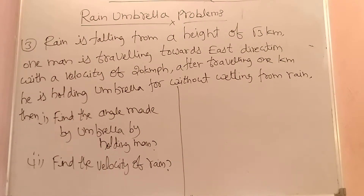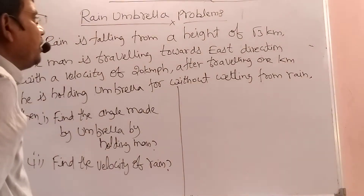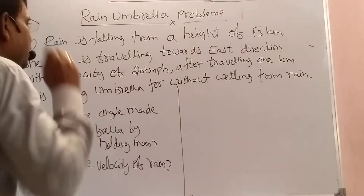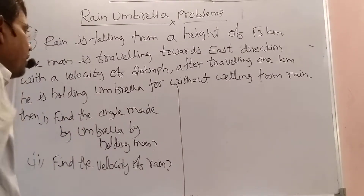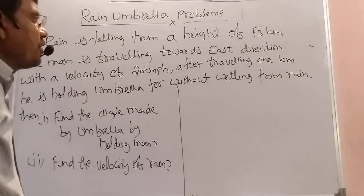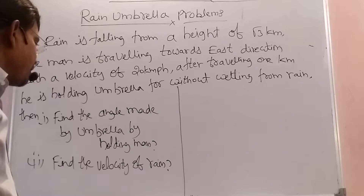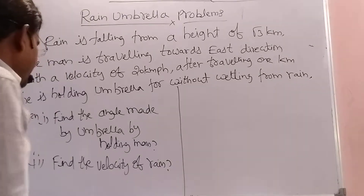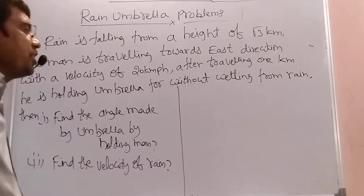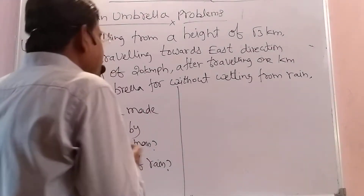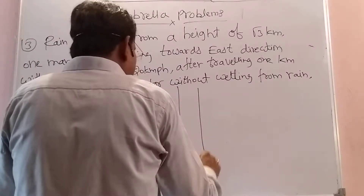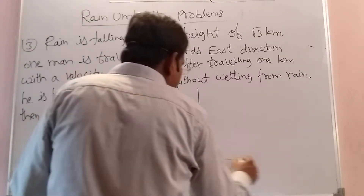Rain is falling from a height of about 3 km. One man is travelling towards east with a velocity of 20 km/h. After travelling 1 km, he is holding an umbrella to avoid getting wet from the rain. Find the angle made by the umbrella held by the man. Next, find the velocity of the rain. Rain is falling vertically downward and the man is travelling towards east.